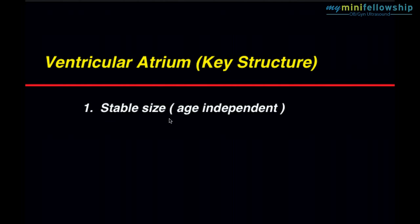First, it is a structure which is stable in size throughout the second and third trimester. The fetus is the most dynamic structure you will ever study in your life, and the fetal central nervous system is the most dynamic system within the fetus. Of all the things that you could observe inside the fetus during the second and third trimester, there is exactly one that is stable throughout that period, making it an age-independent measurement.